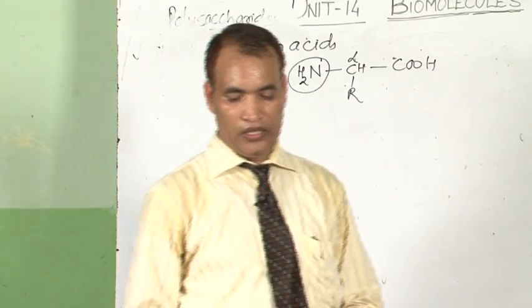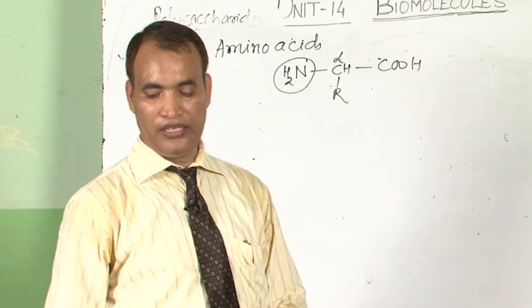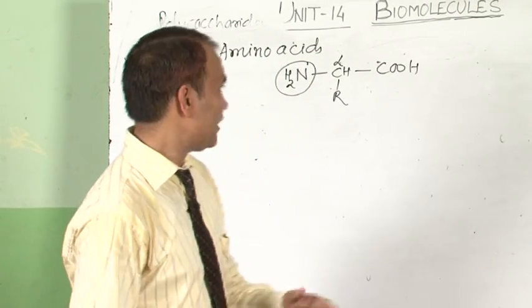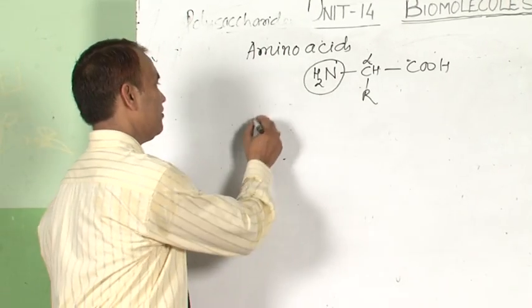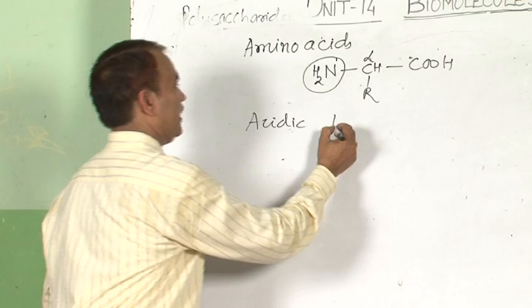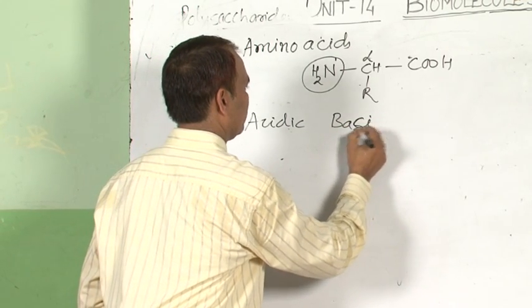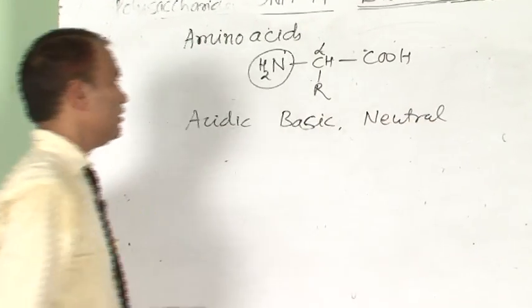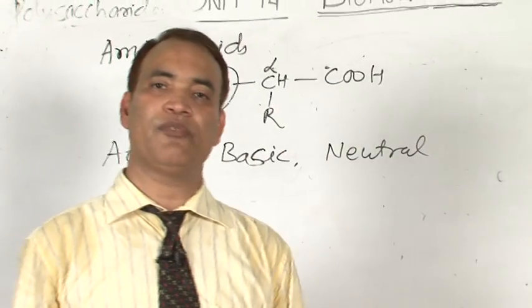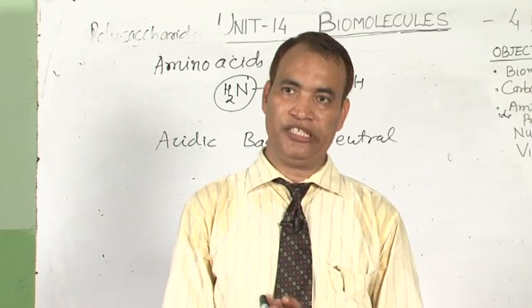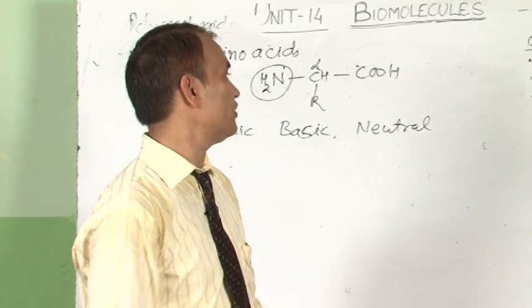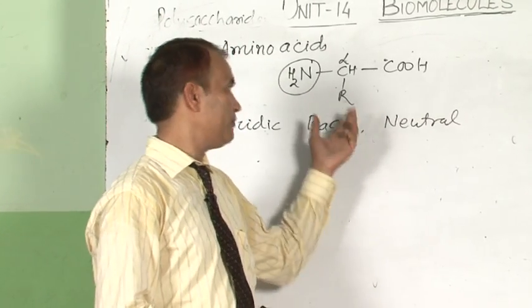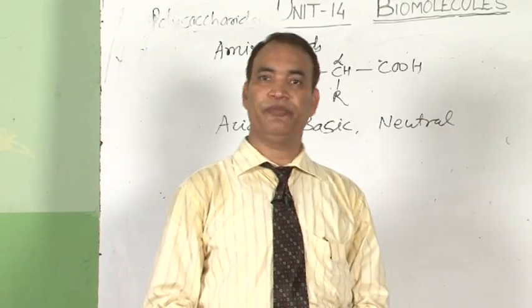The essential amino acids include valine, leucine, isoleucine, arginine, lysine, etc. Non-essential amino acids include glycine, alanine, etc. Another classification of amino acids is acidic, basic, and neutral, based on the relative number of amino and carboxylic groups. If amino and carboxylic groups are equal, the amino acid is neutral. If amino groups outnumber carboxylic groups, it is basic. If carboxylic groups outnumber amino groups, it is acidic.